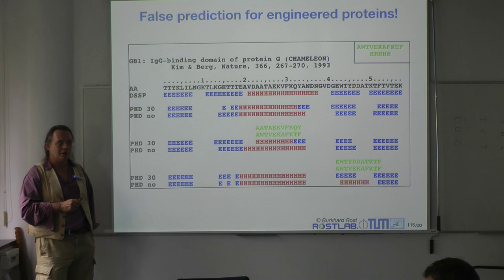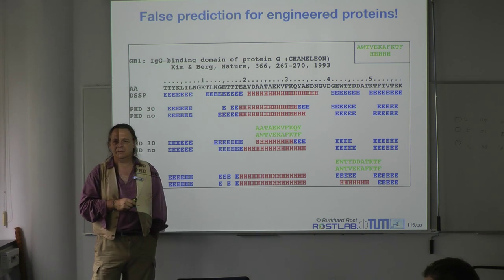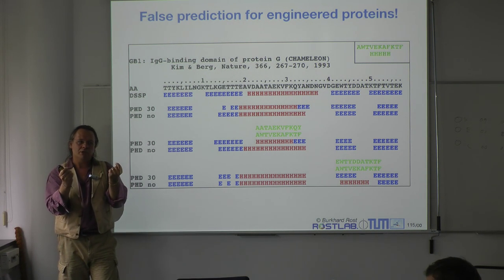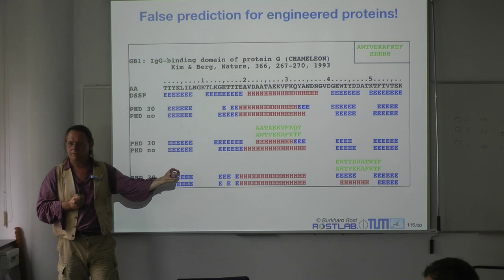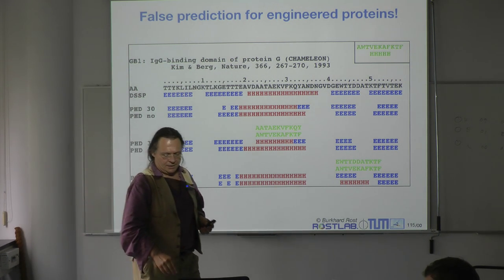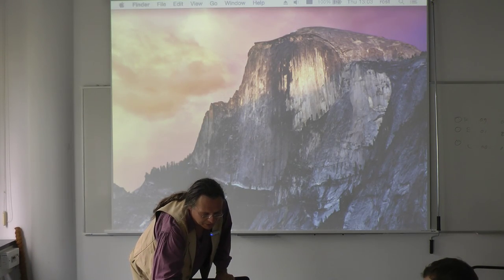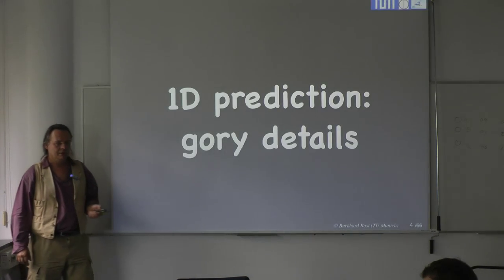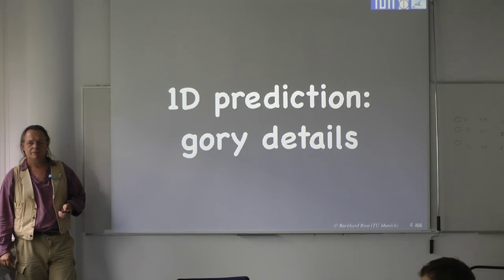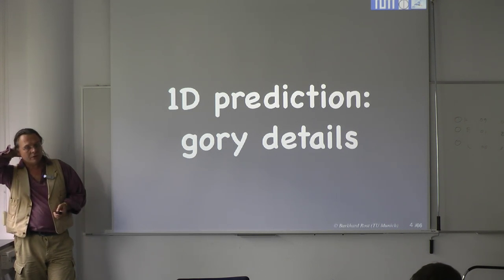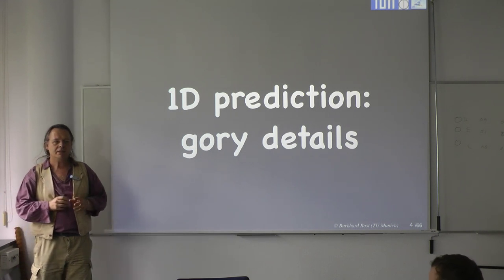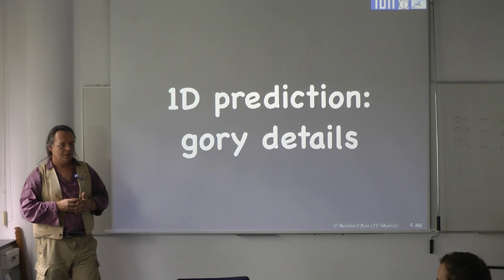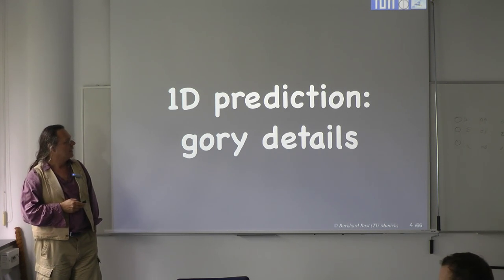That concludes the part about secondary structure prediction in a simplified way. I'm now going to look at some more details about this same story. Next week we will go into membrane prediction — still in the 1D realm — covering membrane helices, membrane strands, then disorder, and then contact predictions.